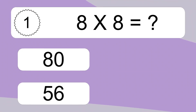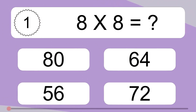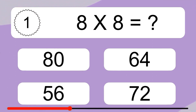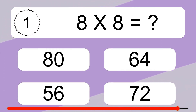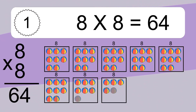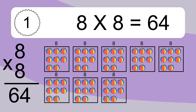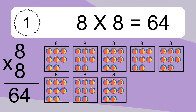8 times 8 equals what? 8 times 8 equals 64. We have 8 boxes, and each box has 8 colorful balls inside. If you count all the balls in all the boxes together, you will have 8 times 8 balls. This equals 64 balls.